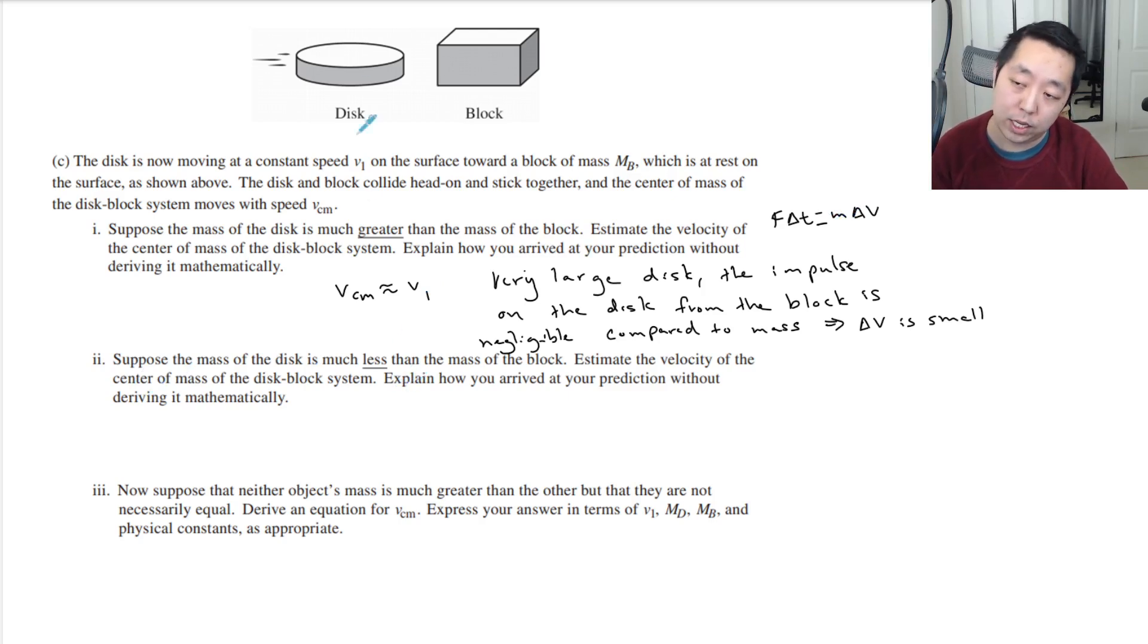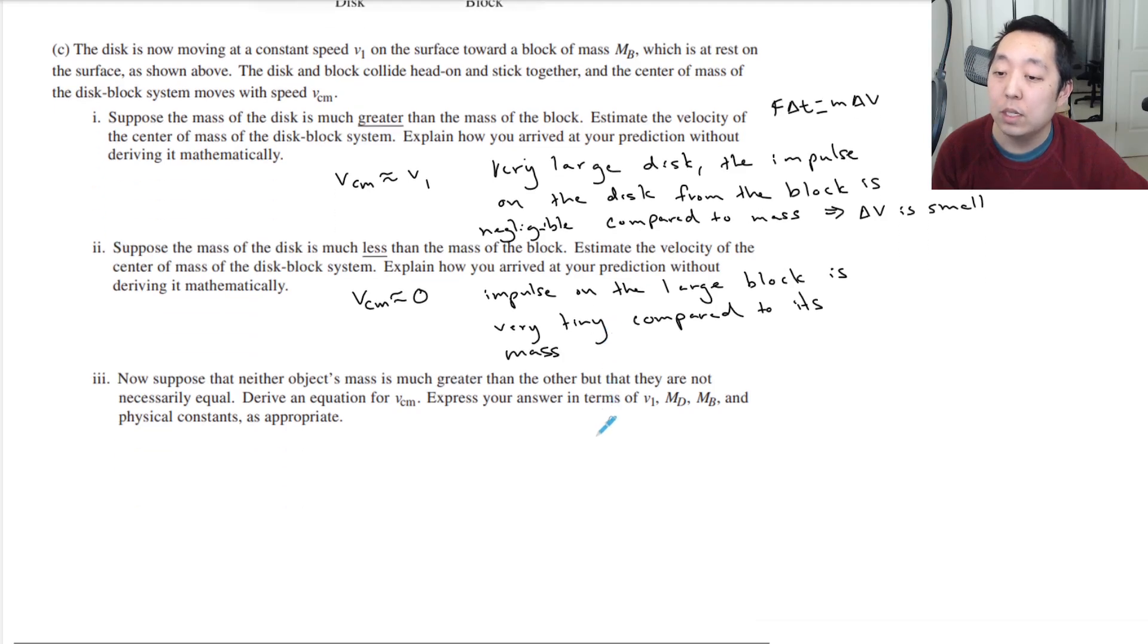Suppose the mass of the disk is much less than the mass of the block, so say now it's reversed. I throw a little pebble at a bowling ball. Estimate the velocity of the center of mass, it's going to be very small, approximately zero. The same thing happens: the impulse on the large block is very tiny compared to its mass.